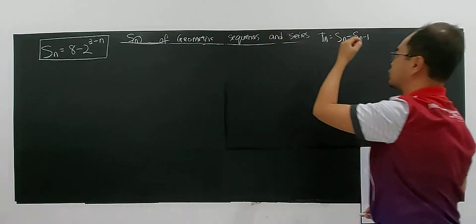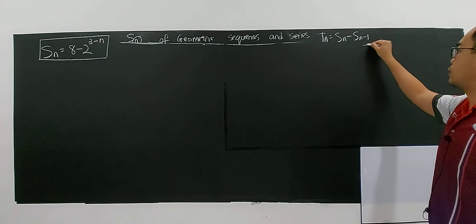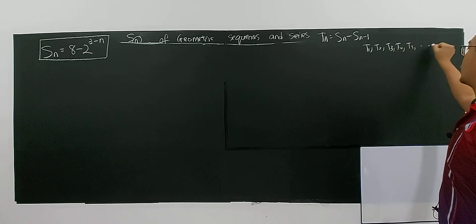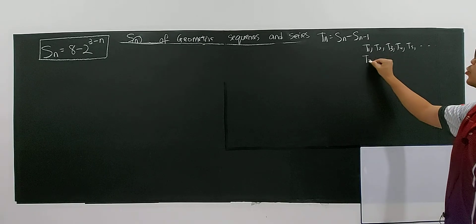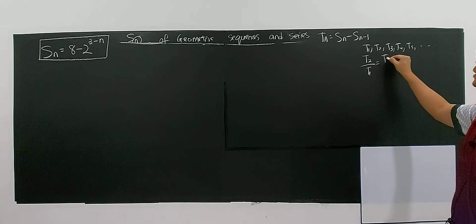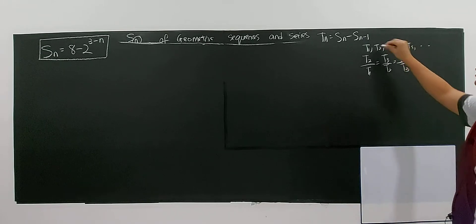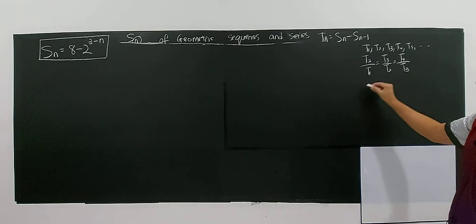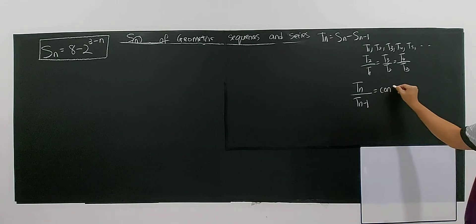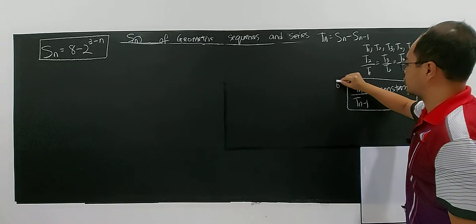They give you SN and you need to show it is a geometric sequence using this formula. If you have T1, T2, T3, T4, T5, and so on, the property for a geometric sequence is: T2 divided by T1 must equal T3 divided by T2, which equals T4 divided by T3, because they all have the same common ratio. This means TN divided by TN-1 must be a constant. This is the most important thing.